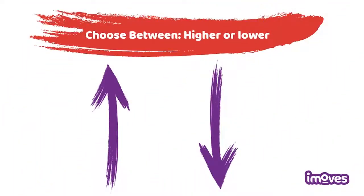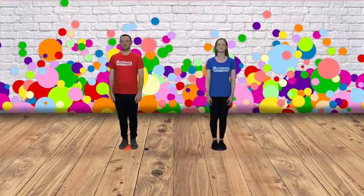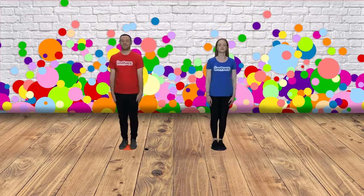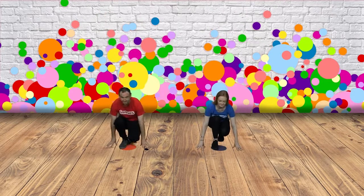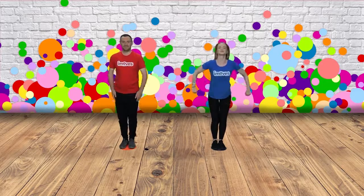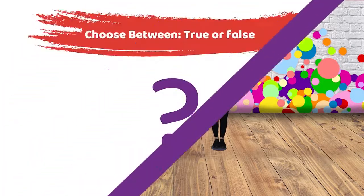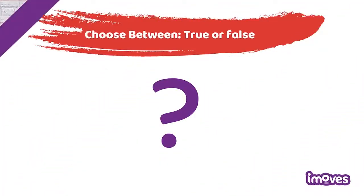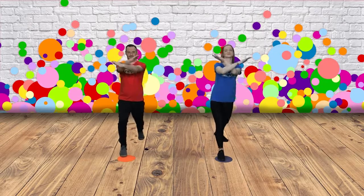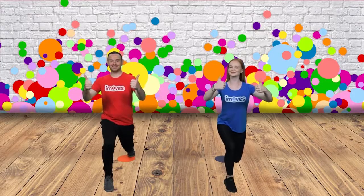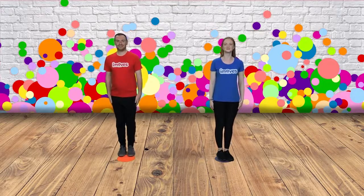This idea is used for maths questions where the answer may be higher or lower, and the movement is relevant to the answer. The first answer is low and the second answer is high — this time with a bit more energy. If the answer is true, step forwards with thumbs up; if the answer is false, step backwards with hands back. True — and so easy. Or false.